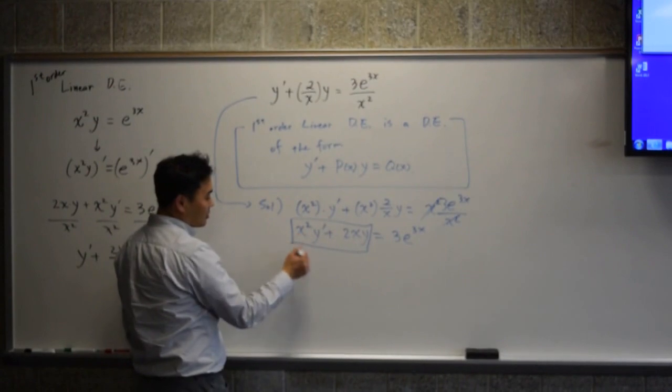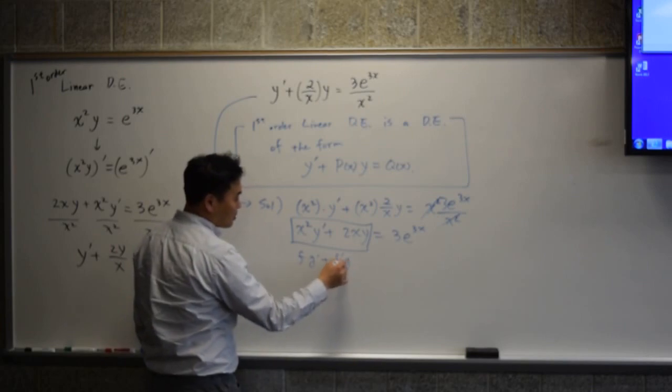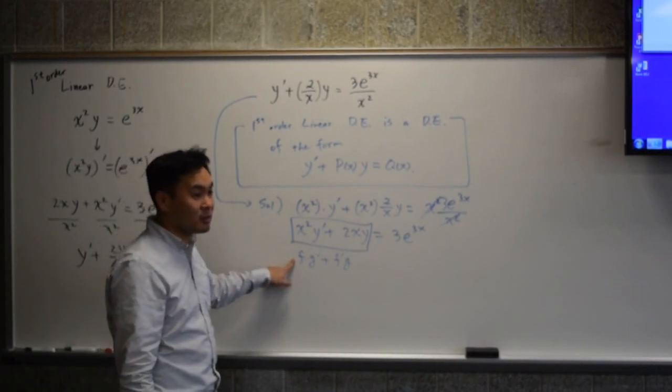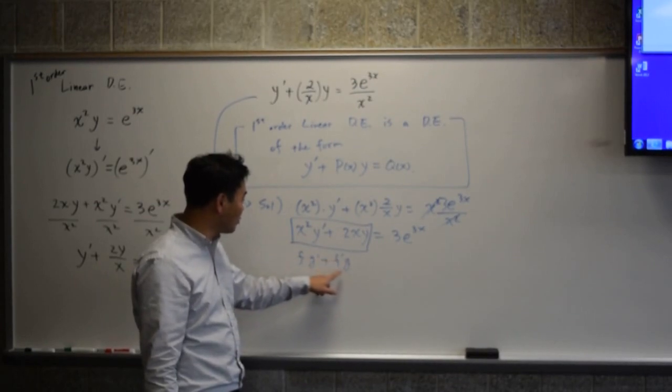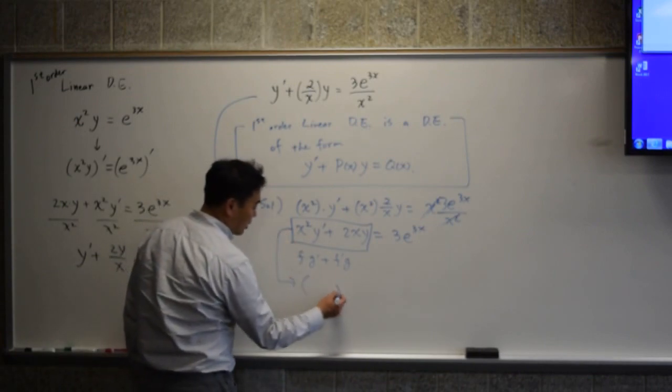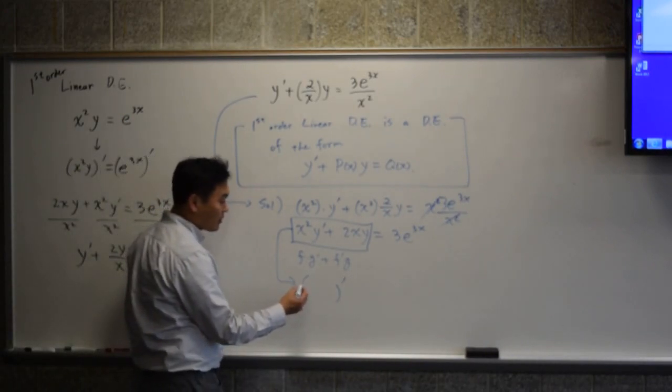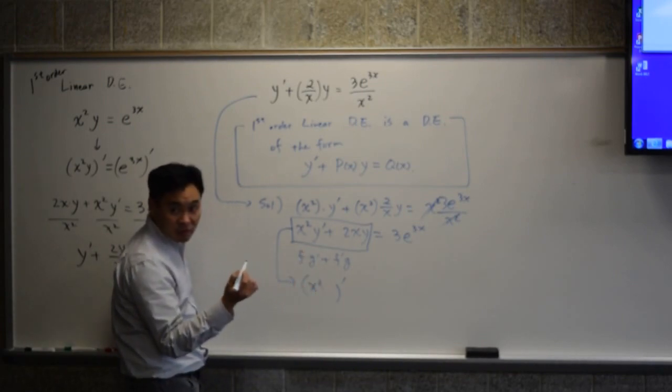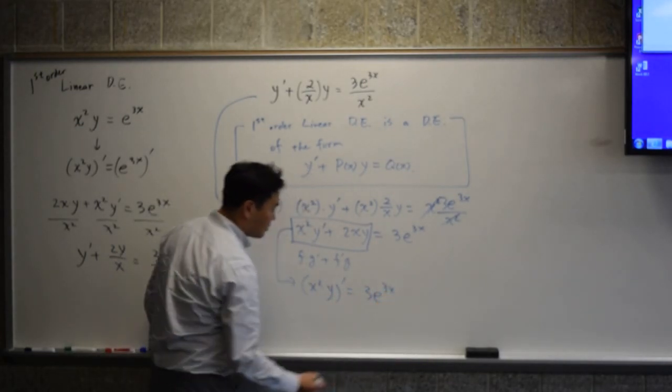And then what would you do? You look at the left side very hard and say, hey, this looks like f times g prime plus f prime g. That's how it looks like, right? What is that? That's the product rule, where f is x squared and g is y. So this is equivalent to derivative of x squared times y.